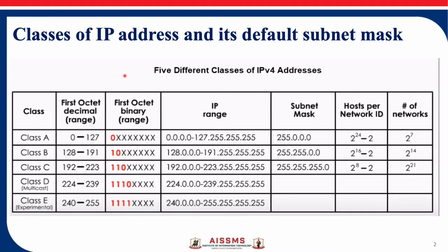If the IP address is in the binary form, you have to check the starting bits. If the starting bit is 0, it belongs to Class A. If the starting bits are 10, it belongs to Class B. If the starting bits are 110, it belongs to Class C. 1110 for Class D and 1111 for Class E.